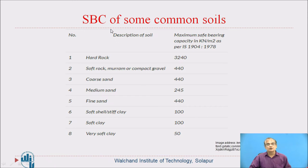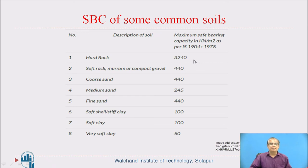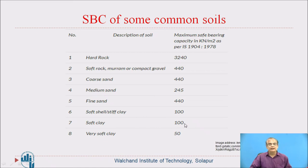Here are safe bearing capacities of some common soils as per IS-1904-1978. Hard rock: 3,000 to 4,000 kN/m². Soft rock like moorum and compact gravel: 440 kN/m². Coarse sand: 440 kN/m². Fine sand: 440 kN/m². Medium sand: 245 kN/m². Soft shale or stiff clay: 100 kN/m². Soft clay: 100 kN/m². Very soft clay: 50 kN/m².